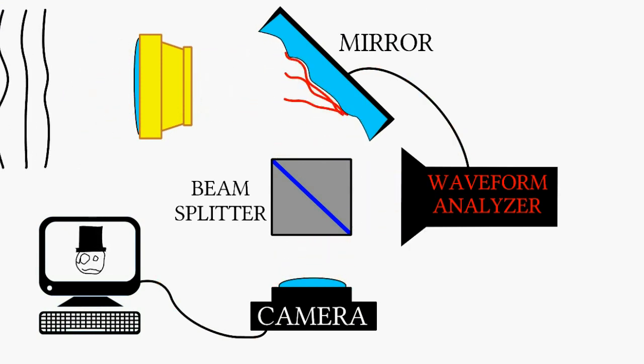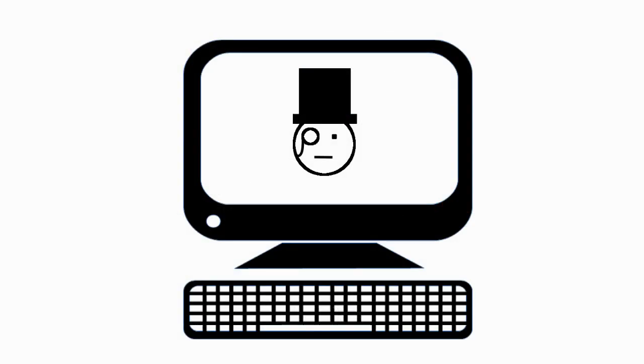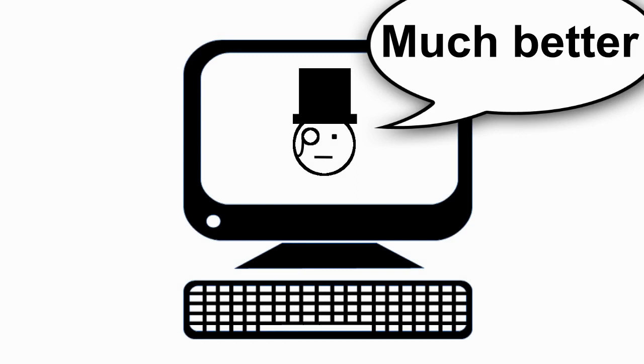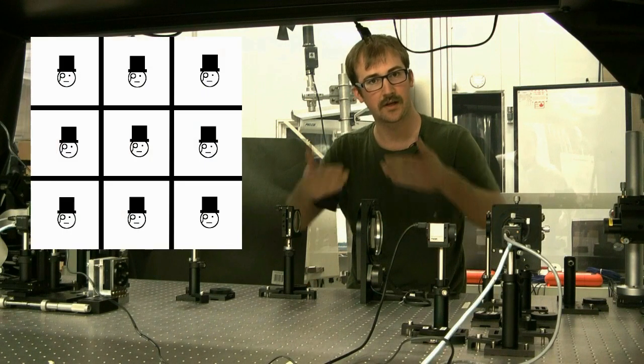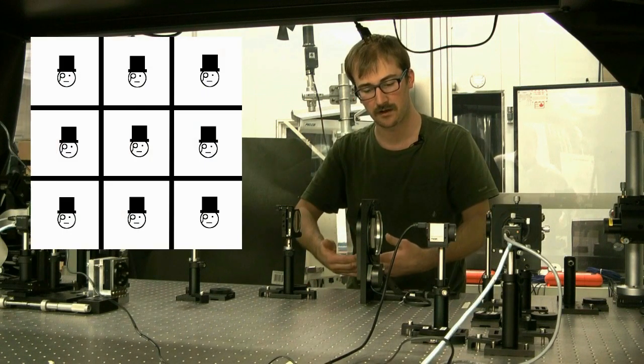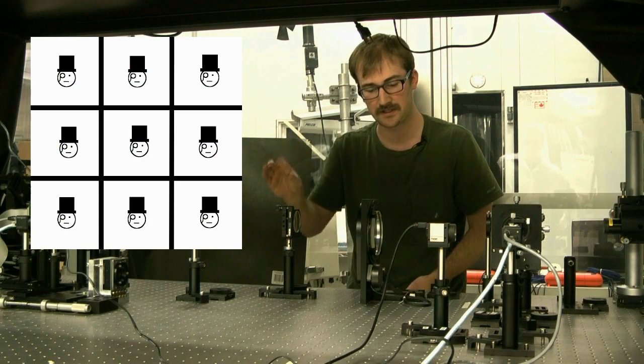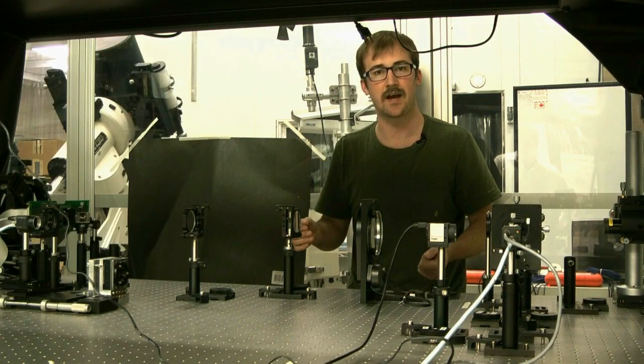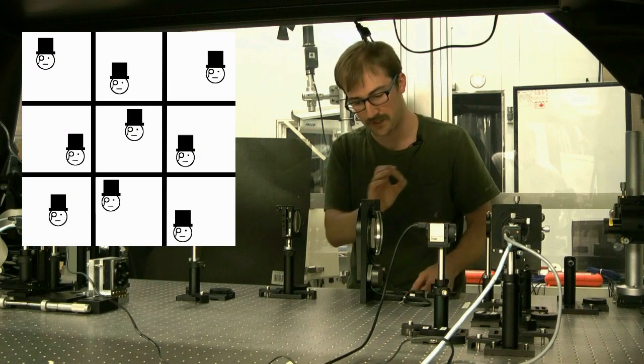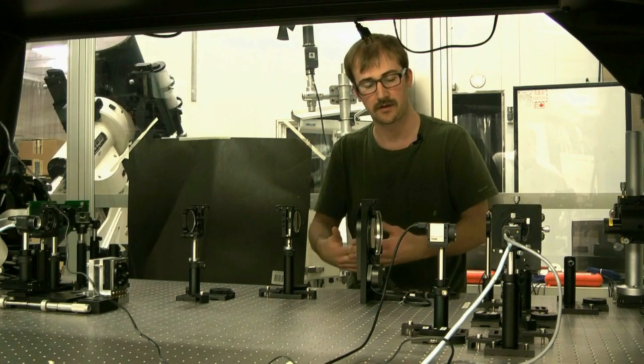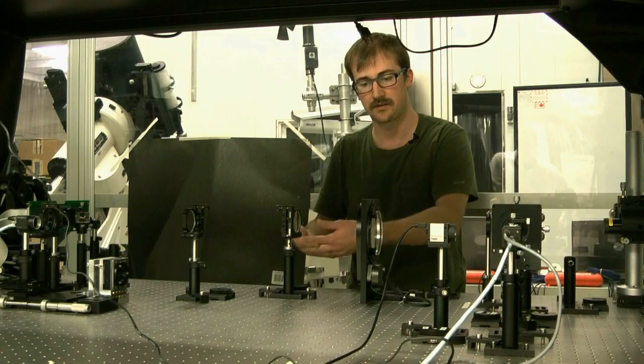There's a variety of different wavefront sensors, but the simplest one is made up of a grid of lenses and you basically send the light through these lenses and if it's a perfectly non-aberrated system, you'll get an evenly spaced grid of light caused by the focusing of each of these lenses. And if there is any aberration in the system, it's going to cause these spots to move and deviate from being on a perfect grid. And that's how you can tell how distorted the light is.